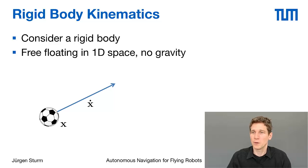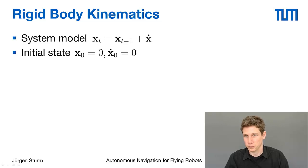Consider just a simple rigid body like the soccer ball here that is floating, free floating in one dimensional space without any gravity. The body itself is located at a certain location x and it's moving in a certain direction x dot. We can specify a system model where the current position depends on the previous position plus the current speed.